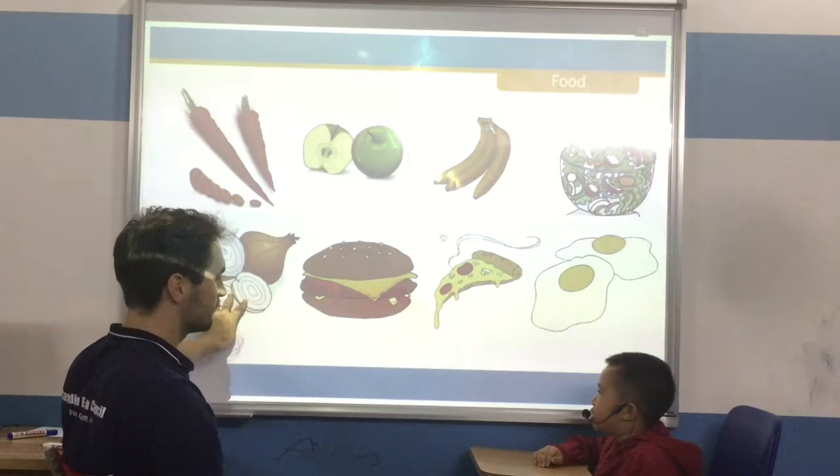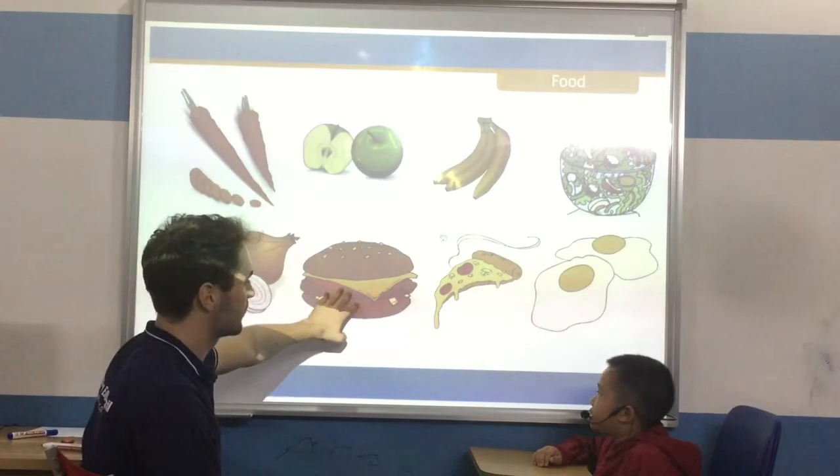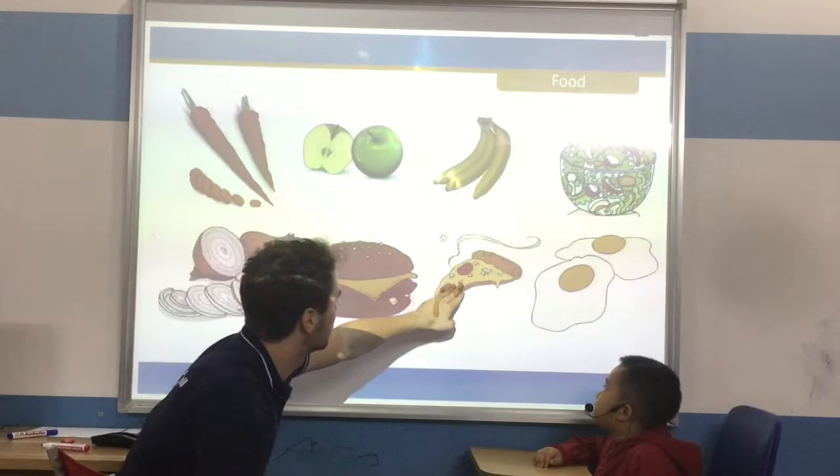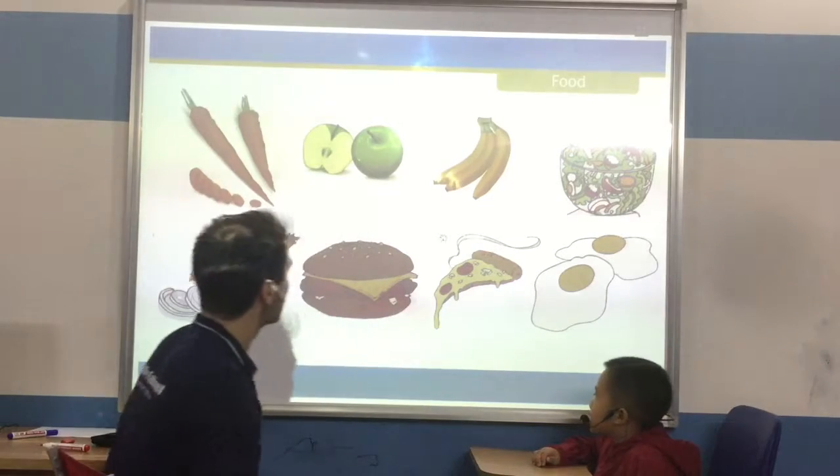What's this? It's onion. Good. What's this? It's hamburger. Good. What's this? It's pizza. Good. What's this? It's egg. Good.